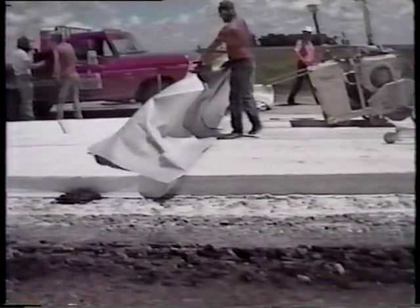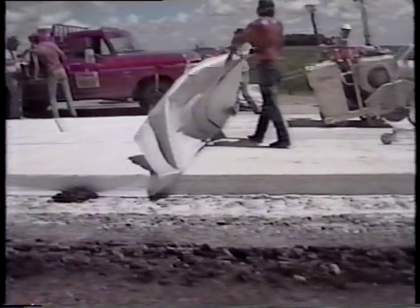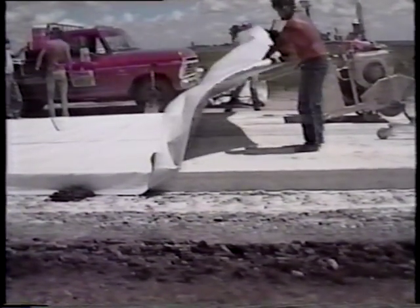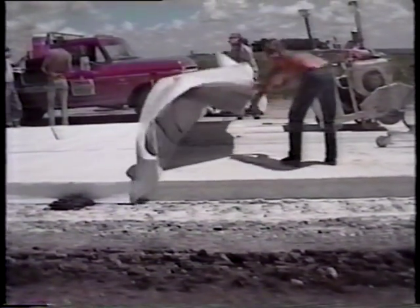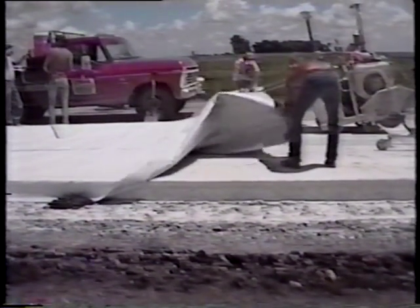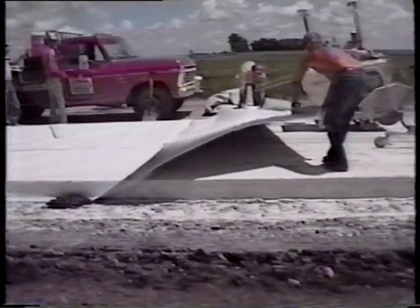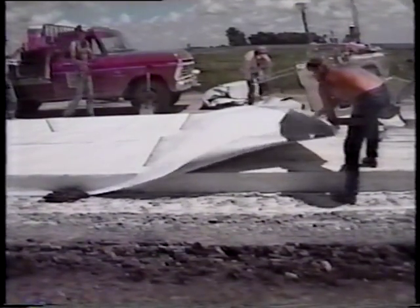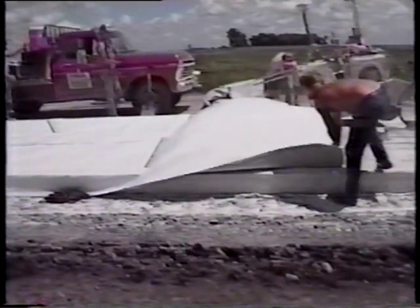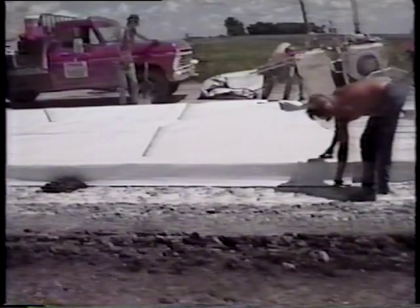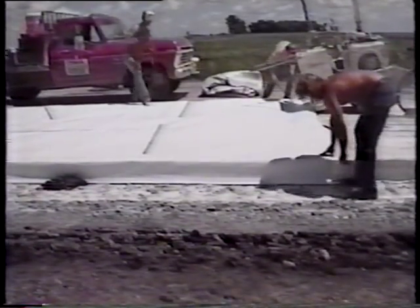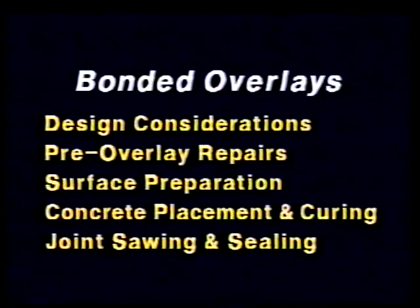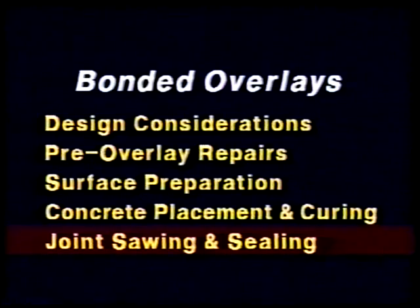Fast-track mixes should develop enough strength to resist thermal stresses before the temperature drops. Another possible solution is the use of insulation blankets. And that brings us to the last steps: joint sawing and sealing.